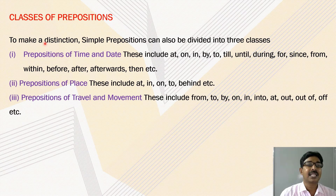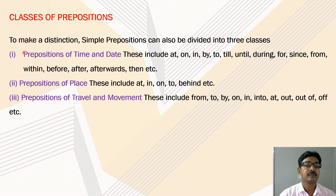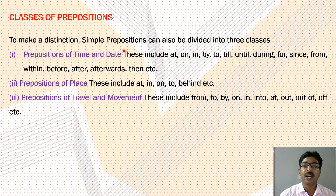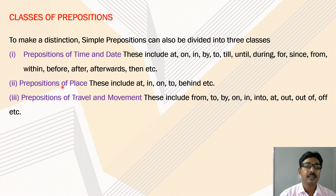Now let us see the classes of prepositions. Simple prepositions can also be divided into three classes: prepositions of time and date, prepositions of place, and prepositions of travel and movement.